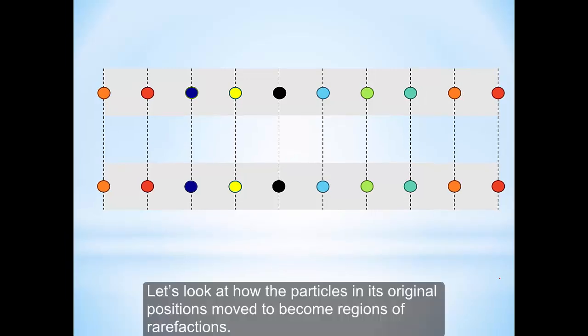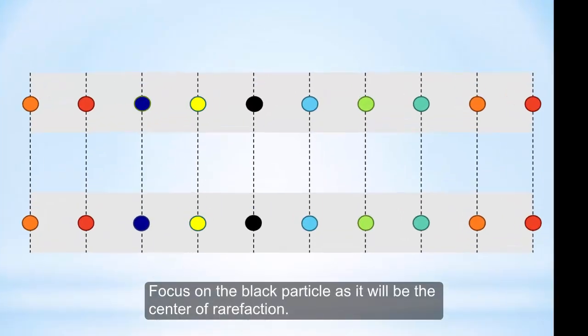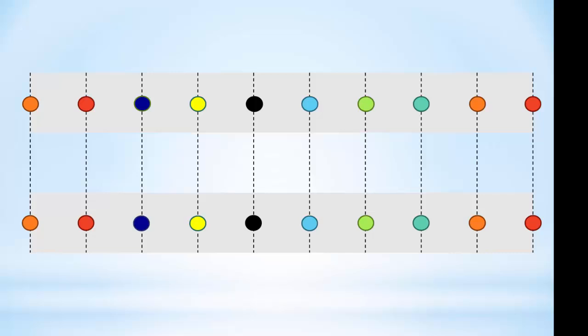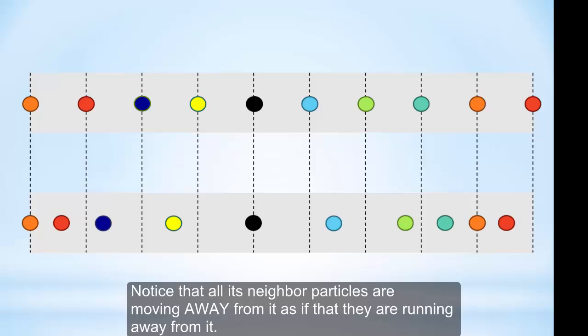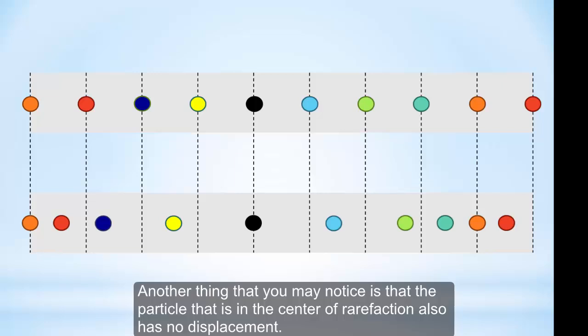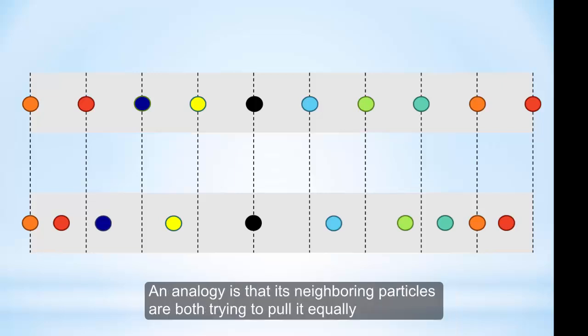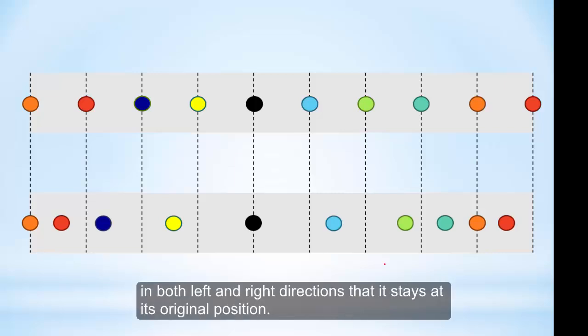Let's look at how the particles in their original positions move to become regions of rarefaction. Focus on the black particle, as it will be the center of rarefaction. Notice that all its neighboring particles are moving away from it. The particle at the center of rarefaction also has no displacement. An analogy is that its neighboring particles are both pulling equally on its left and right, so it stays at its original position.